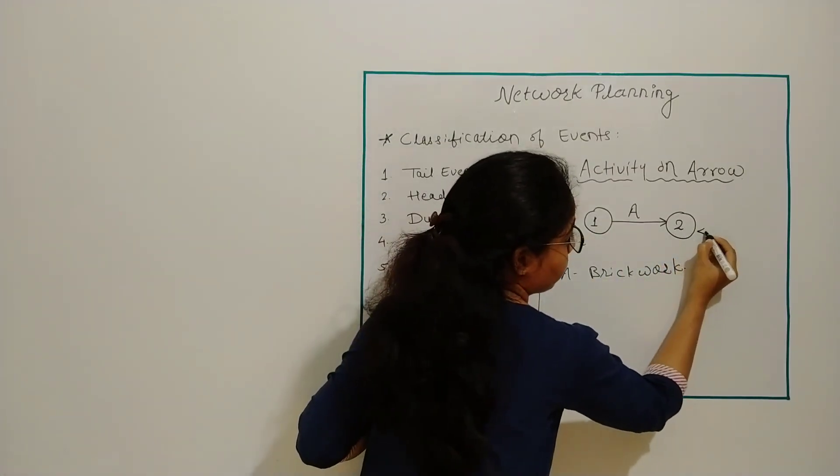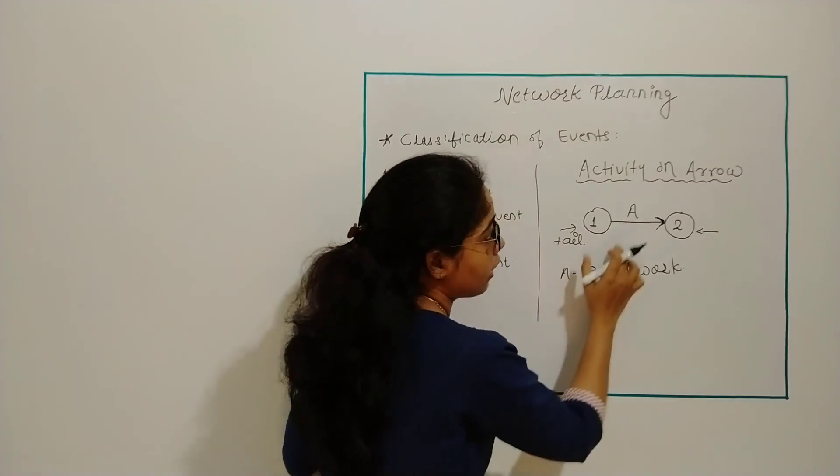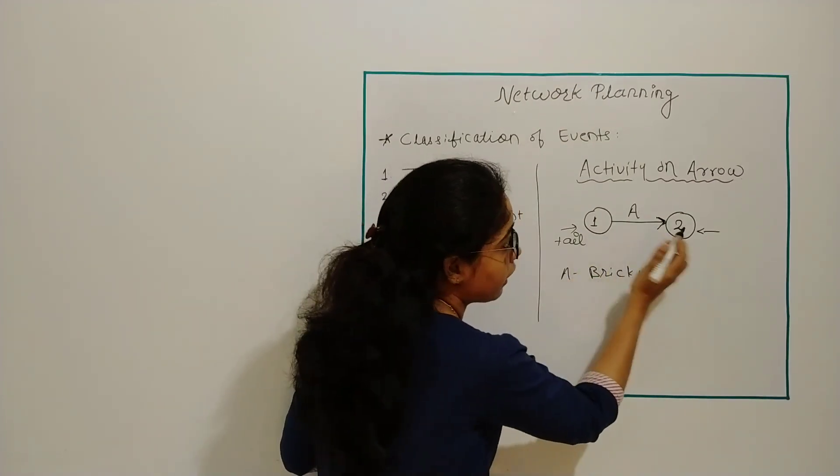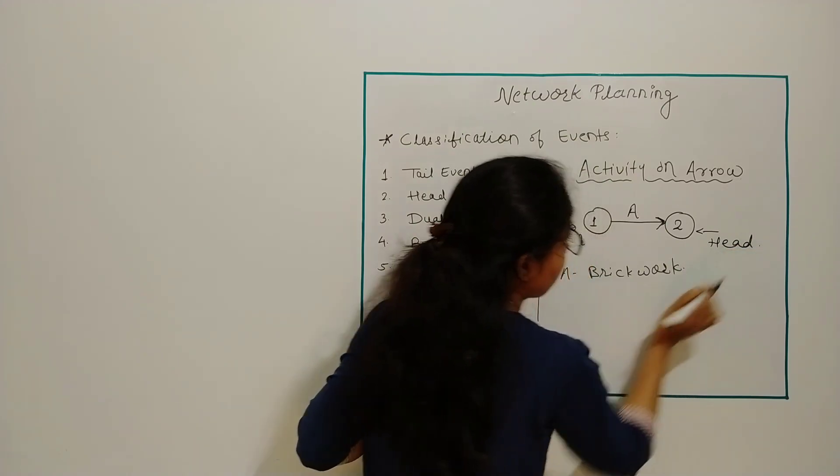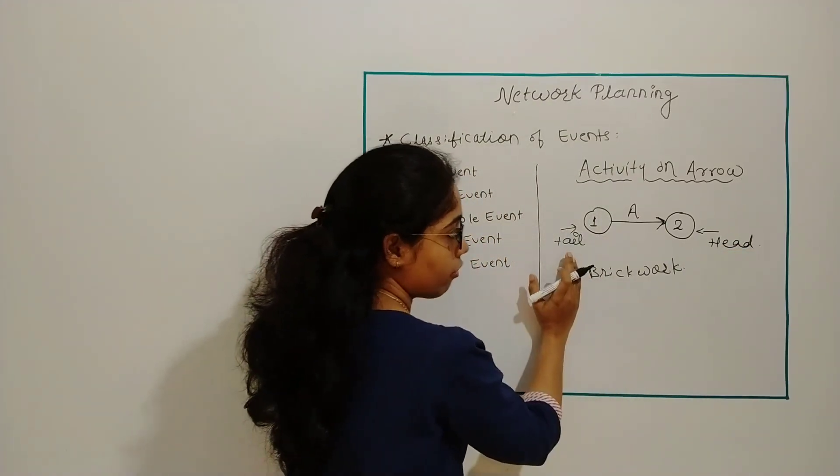Head of the arrow is here and your activity will be completed at node 2. So here we are done with tail event and head event.